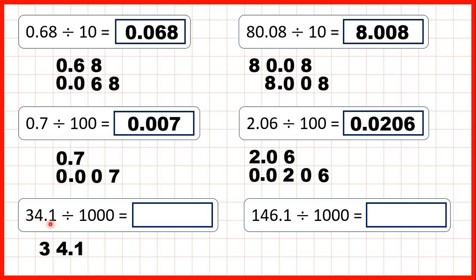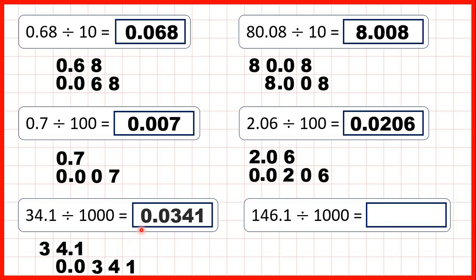Now we have 34.1 — we copy down the decimal point, but this time we're dividing by a thousand. We're dividing so digits move to the right, and in 1000 we have three zeros, so digits move three squares to the right. Copying each digit three squares to the right, we write zeros in the empty squares after and before the decimal point, giving us 0.0341.